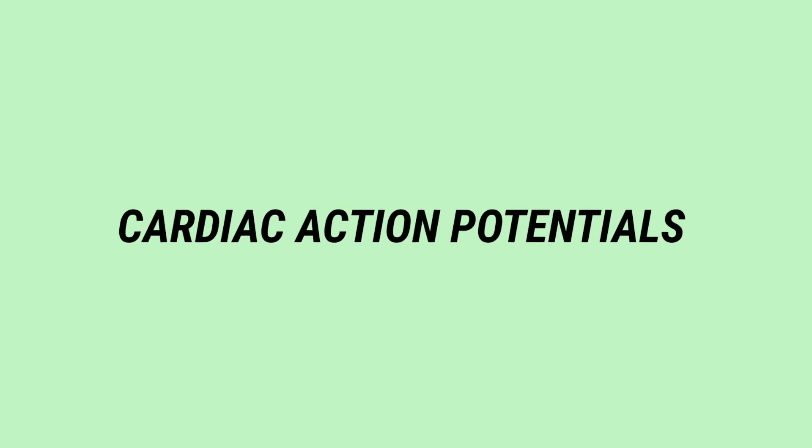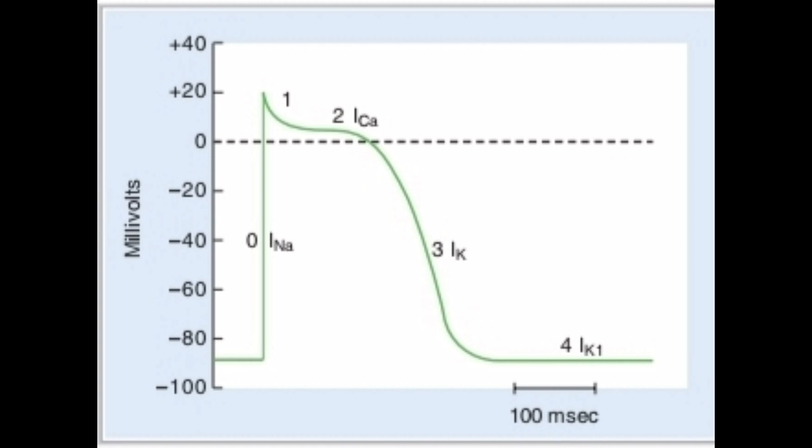Cardiac action potentials. There are five phases: Phase 0, Phase 1, Phase 2, Phase 3, and Phase 4. Phase 0 is the upstroke of the action potential. Phase 1 is a brief period of initial repolarization. Phase 2 is the plateau of the action potential. Phase 3 is repolarization. Phase 4 is the resting membrane potential.